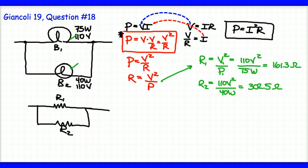Now I have the resistive values for both of the bulbs and I can treat it as a parallel circuit. One over the equivalent resistance of these parallel bulbs is one over R1 plus one over R2. I'll substitute these two values in: one over 161.3 plus one over 302.5 equals one over my equivalent resistance.